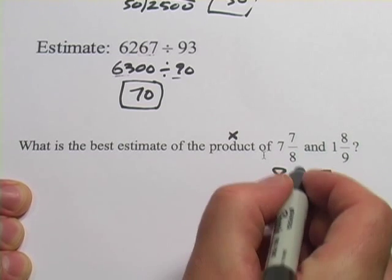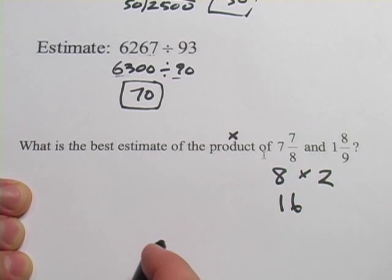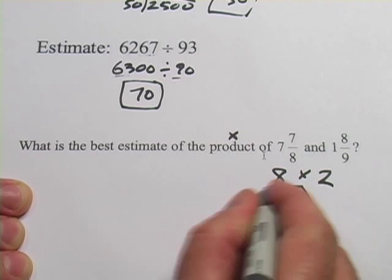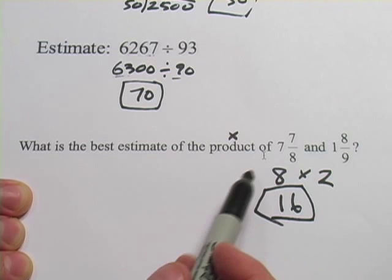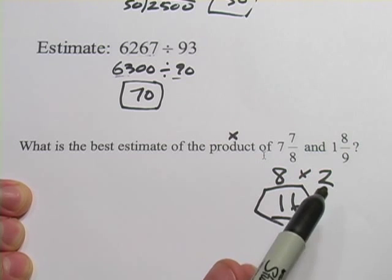So we're multiplying 8 and 2, well, that's easy, that's 16. And that is the answer you would give if you're estimating the product of 7 and 7 eighths and 1 and 8 ninths.